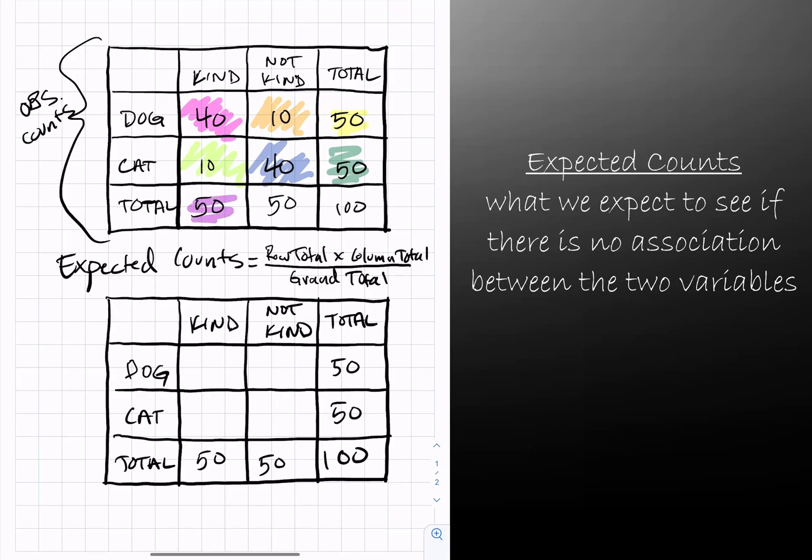However, on the outside of the table, the total column and the total row, those values will be used to calculate the expected counts. Because 100 is the grand total, every cell's expected count will be calculated using 100 as the denominator. However, each cell has a different row total and column total.